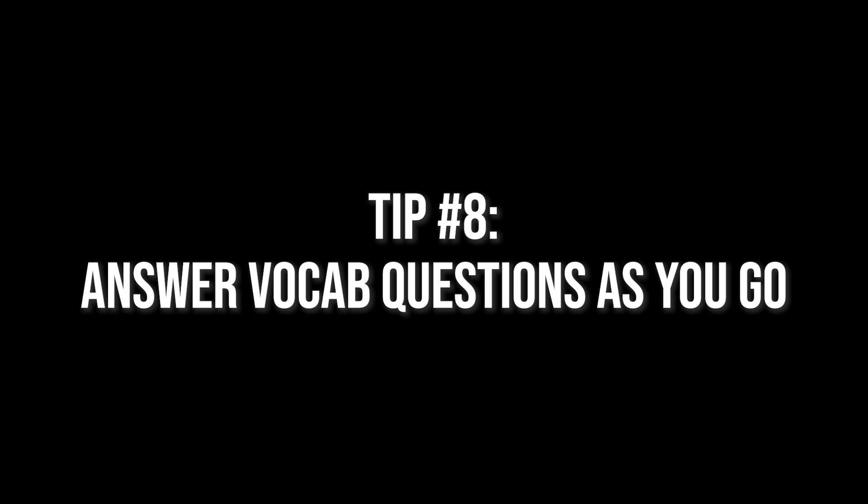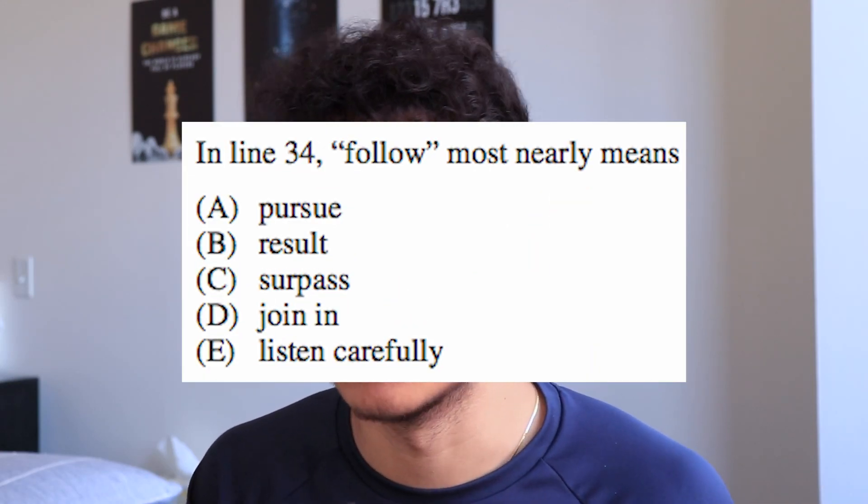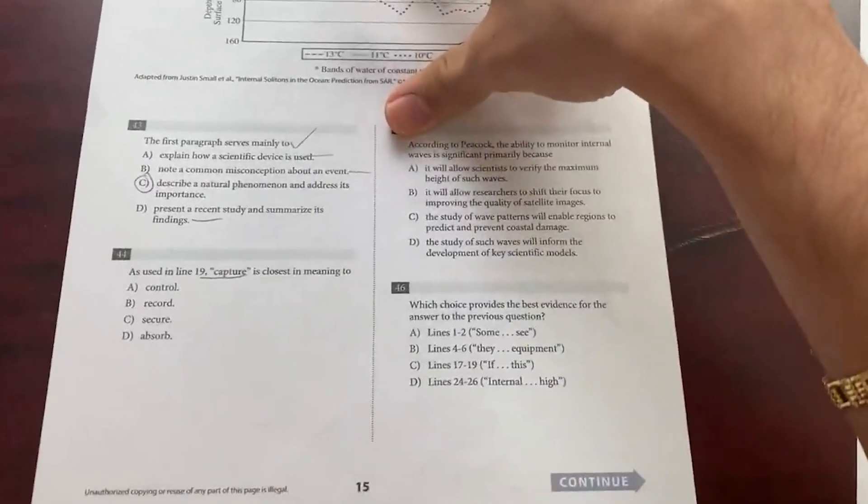That brings me to my next strategy: answer vocabulary questions as you go. These are gimme questions that can be answered the first time you come across that word. A lot of students read the passage, then read the questions, and go back to find the line — but if you already knew that word would be questioned, you can answer it right away while the context is fresh. When you reach the actual questions section and see that question seven is already answered, you get a great feeling — like you have so much extra time. I cover all these tricks in my SAT reading course, link in the description for a discount.